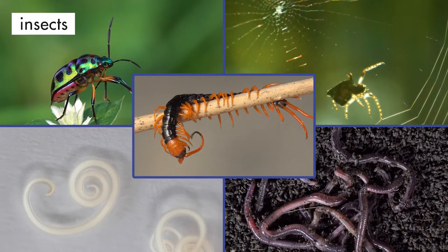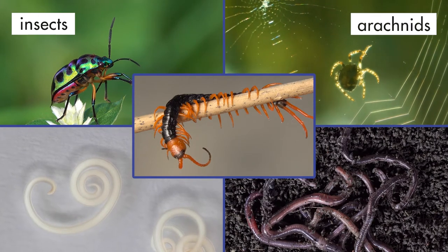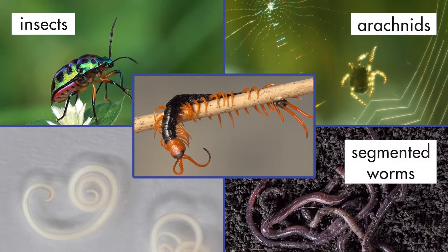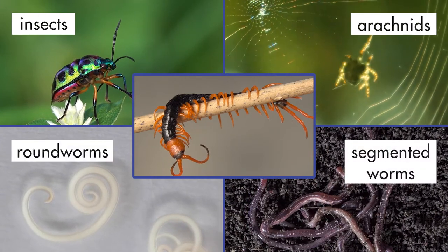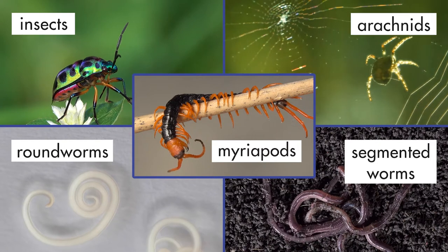For ease of study, we group the organisms of each soil sample into five categories of invertebrates: insects, arachnids, segmented worms, roundworms, and myriopods.